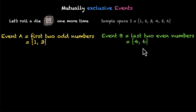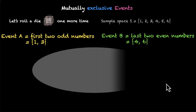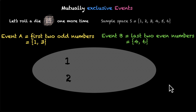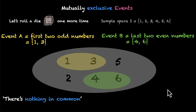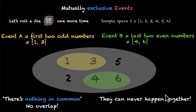Now let's try to visualize event A and event B on our sample space S. This is our sample space, which has elements 1, 2, 3, 4, 5, and 6. Event A contains 1 and 3, and event B contains 4 and 6. What we can see from this image is there's nothing in common between the yellow region and the green region — there's no overlap. They can never happen together. In set language, we can say that A intersection B is phi, which means there's nothing in common between both sets A and B.